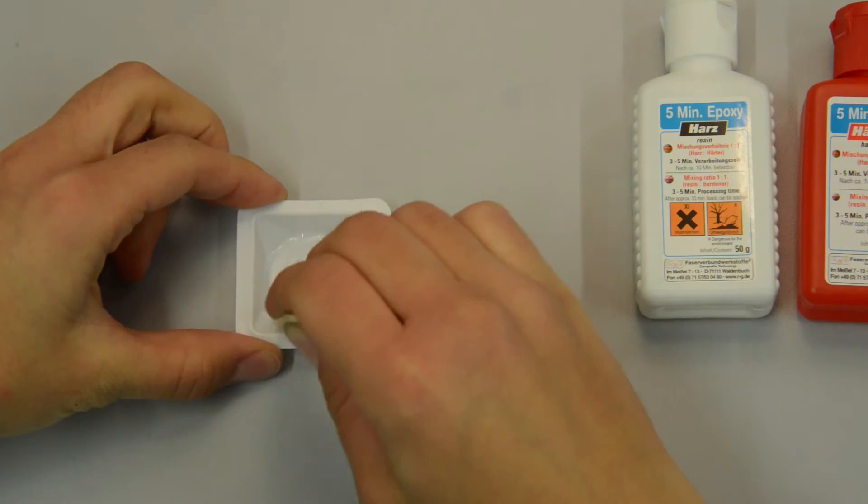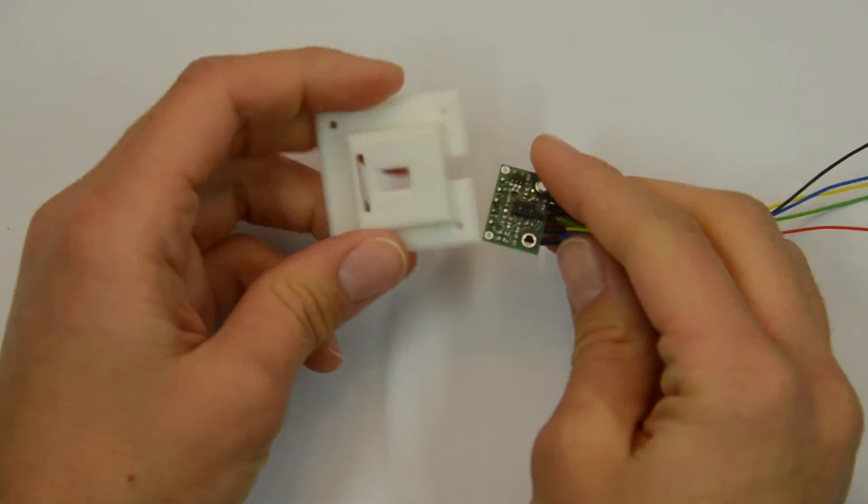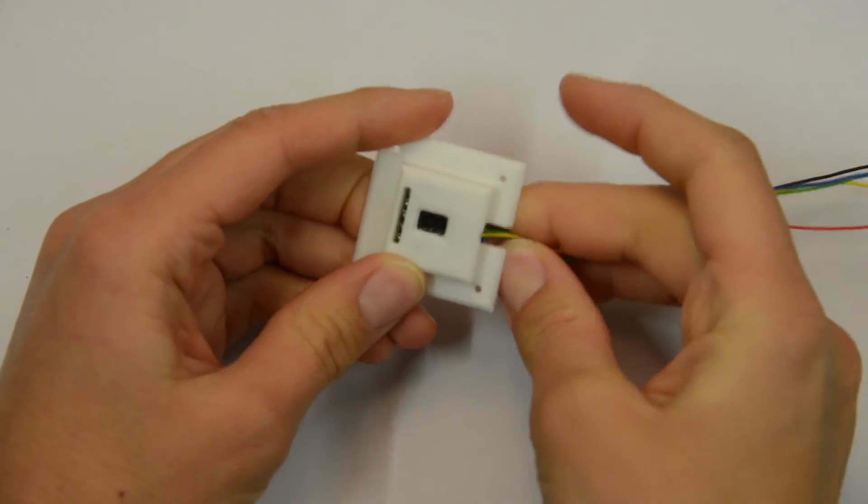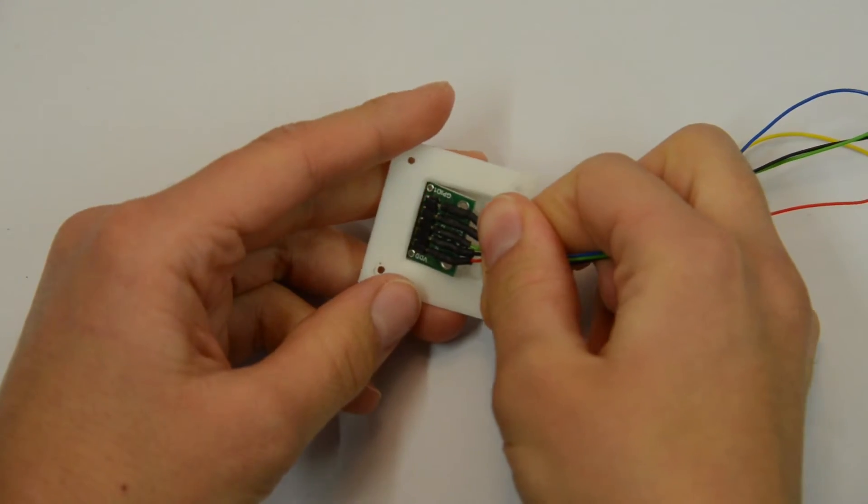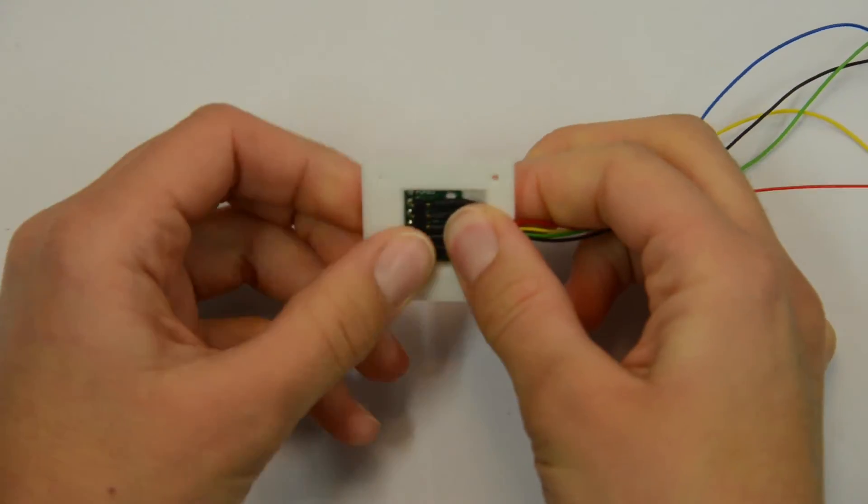It is recommended to work on a sheet of protective paper. Insert the distance sensor into its plate part and make sure it lies flat.